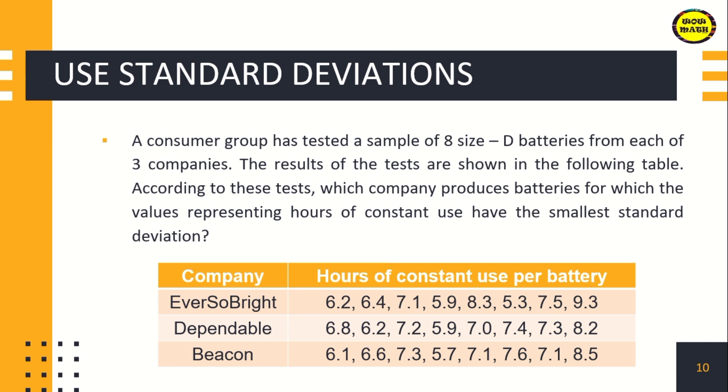For the second company, Dependable: 6.8, 6.2, 7.2, 5.9, 7.0, 7.4, 7.3, and 8.2. And for the third company, Beacon, the hours are 6.1, 6.6, 7.3, 5.7, 7.1, 7.6, 7.1, and 8.5.